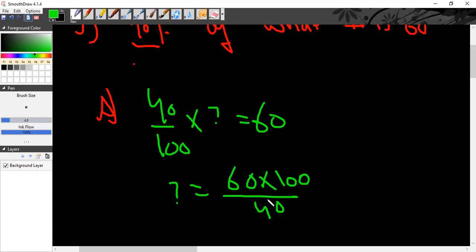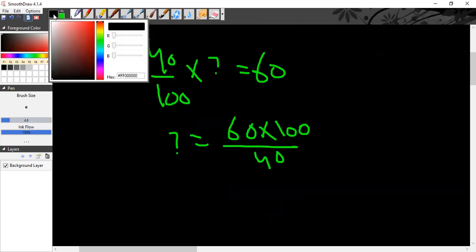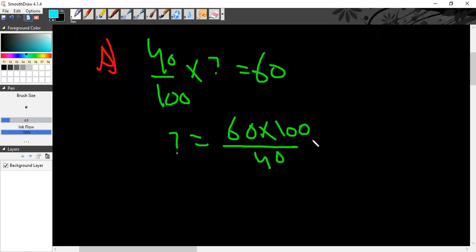60 multiplied by 100, divided by 40. So it will be simplified as we have discussed. Here: two twos are four, three are six, then two, two fives are ten.